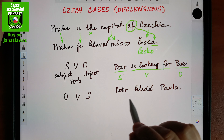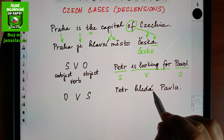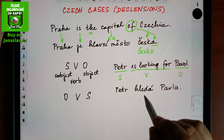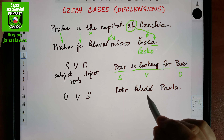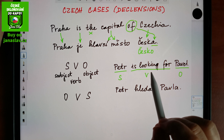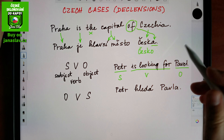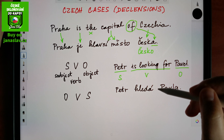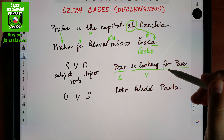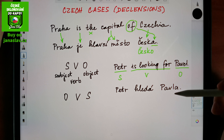Then we have the verb. In English it was 'is looking,' but in Czech we only have hledá, because the tense system in Czech is simpler — we only have past, present, and future simple; no continuous, no perfect tenses. Also, we do not need a preposition in this case in Czech. So Petr hledá — and then you see there is not Pavel, there is Pavla.